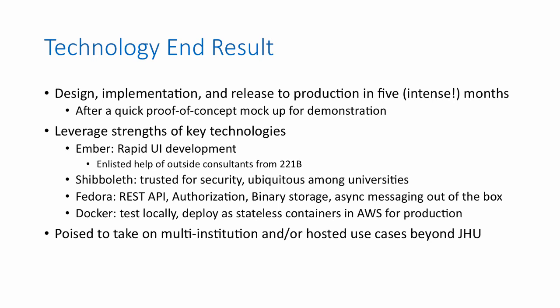The end result is that we designed, implemented, and released PASS to production on a very tight schedule. Last year we wrote a demo mockup to show members of the administration and faculty. Development in earnest started this year, and our release to production was in July — an extremely tight schedule. The only way we got there was by leveraging key technologies and key people. Ember allowed rapid development of the UI and iteration with respect to the different use cases and feedback. Shibboleth is trusted by our institution, is rather ubiquitous among other institutions, and protecting the repository with Shibboleth made a whole class of problems go away that we didn't have to implement. Fedora brought a REST API, authorization, binary storage, and asynchronous messaging out of the box, and with minor tweaks we were able to use all of that.